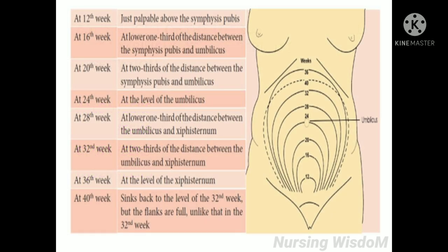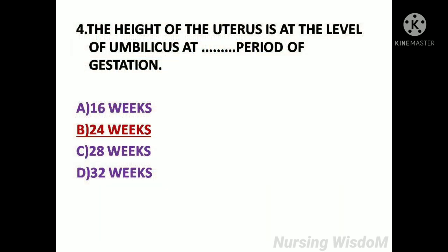At 12 weeks the uterus is just palpable above the symphysis pubis. At 16 weeks it is at the lower one-third between the symphysis pubis and umbilicus. At 20 weeks it is at two-thirds of that distance. At 24 weeks it is at the level of the umbilicus. At 28 weeks it is at the lower one-third between the umbilicus and xiphisternum. At 32 weeks it is at two-thirds of that distance. At 36 weeks it is at the level of the xiphisternum. At 40 weeks it sinks back to the level of the 32nd week, but the flanks are full. So the answer is Option B: 24 weeks.